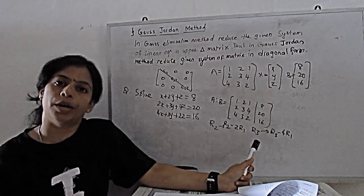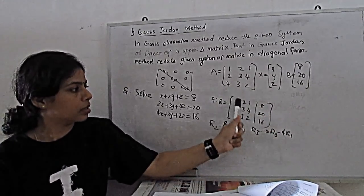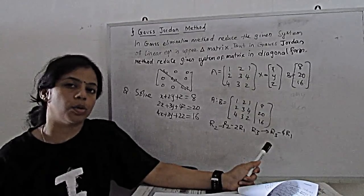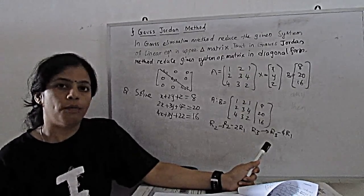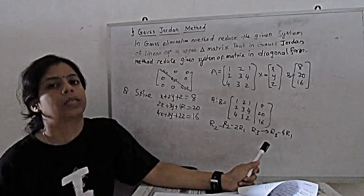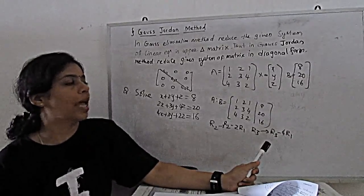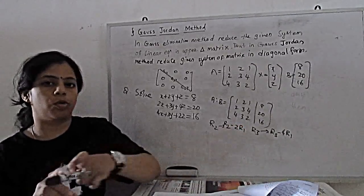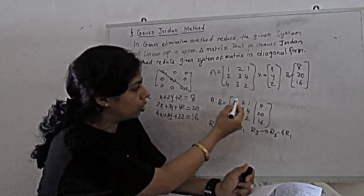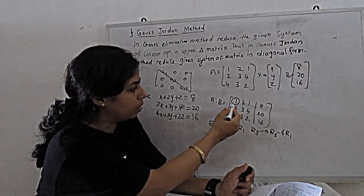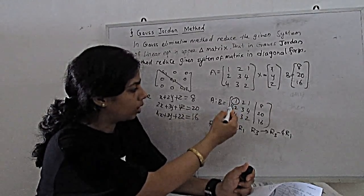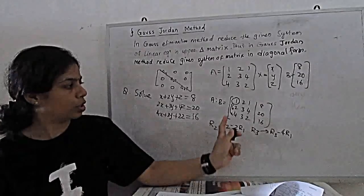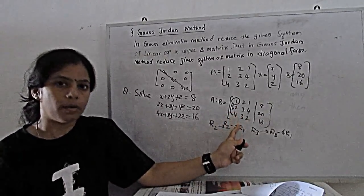What is the operation to reduce these elements other than diagonal to become 0? With the help of row operations, first step is same as Gauss elimination method. We have to reduce this element. This becomes 0 and with this element, this becomes 0. So for these, we have two operations.